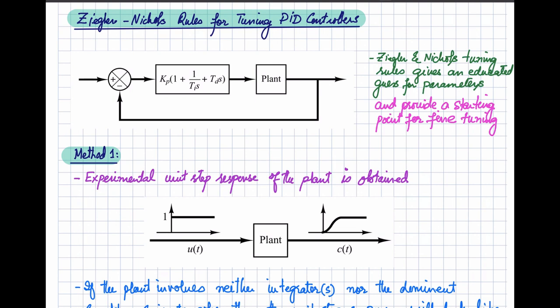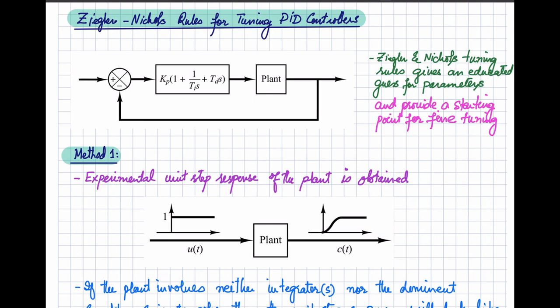If you know the mathematical model, you can specify the desired transient and steady state response and calculate the controller gains using analytical techniques. However, if the plant is so complicated that its mathematical model cannot be easily obtained, then instead of using the analytical method we use the experimental approach.